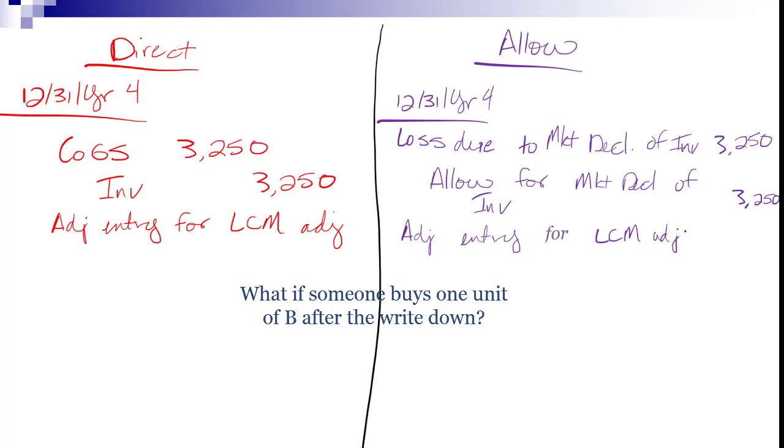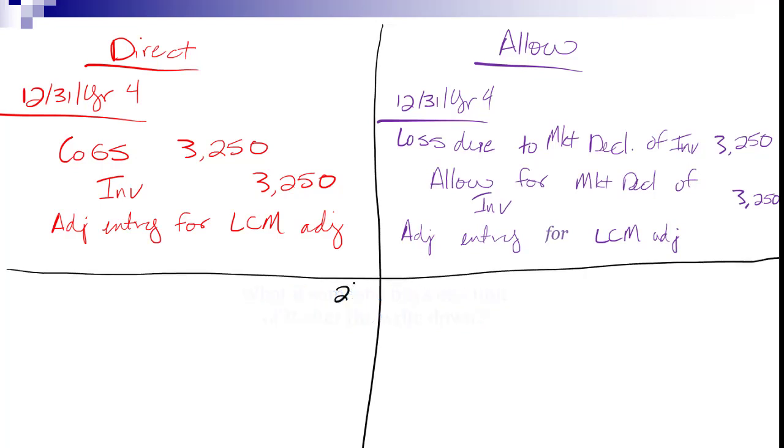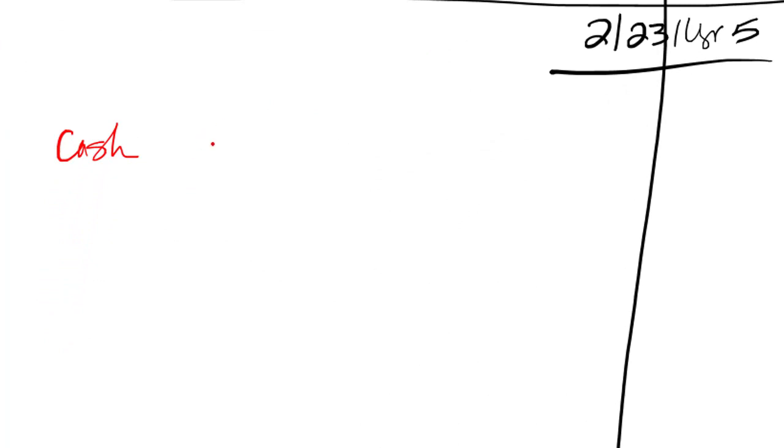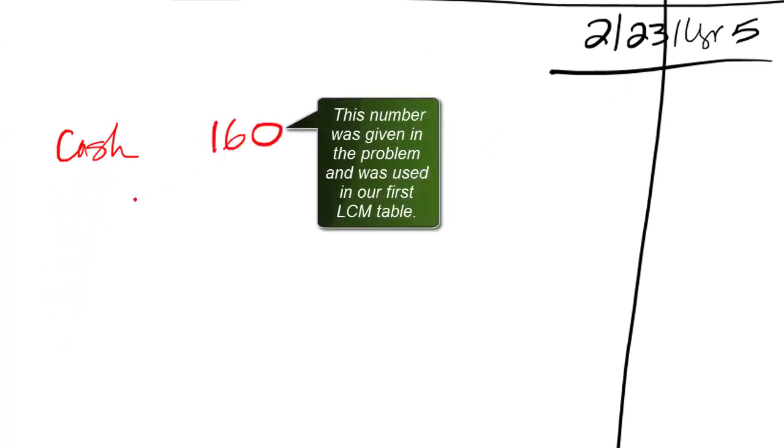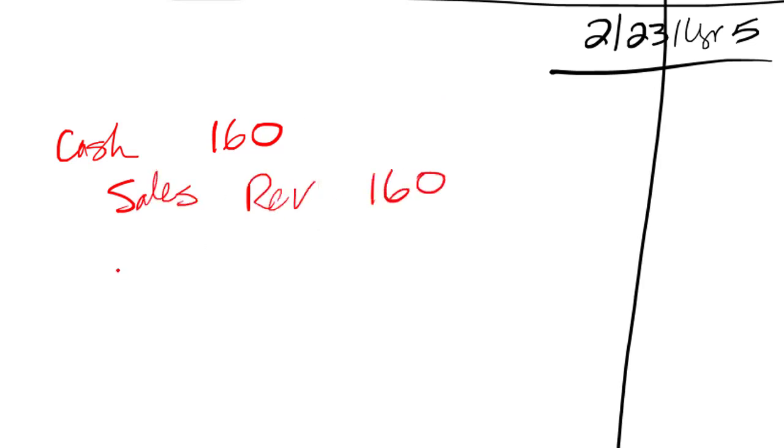Hopefully that makes sense. I've got my journal entries, I've got the calculation, I've dropped the value. The other piece we need to talk about is, what happens next year? Let's say somebody comes into our shop and buys just one item of B after we do this write down. What will our journal entries look like under the two methods? Let's say it was February 23rd of year five. If you remember, our cash amount, our sales price for this item was $160.